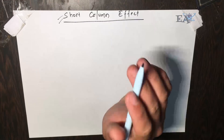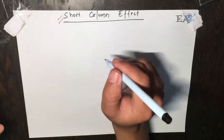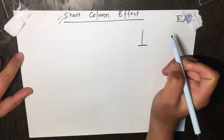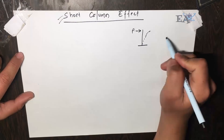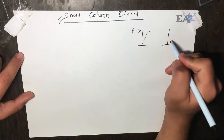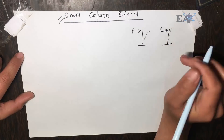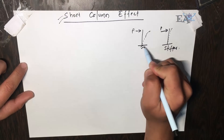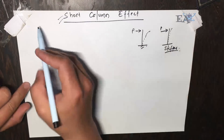Welcome to the interview question series. In this video, I'll be talking about the short column effect. Let's assume two kinds of columns. The first one is made of rubber — once you apply a lateral load P, it will easily bend. The second column is made of metal, so if you apply the same load P, it will deflect very little. This means the metal column is stiffer compared to the rubber column — stiffer means it is difficult to bend, not flexible.